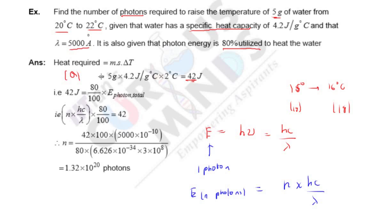So 42 Joules is the required heat. Everything is given. h value you know is 6.626 times 10 to the minus 34. h is also known as Planck's constant.